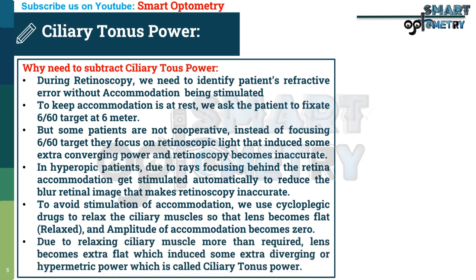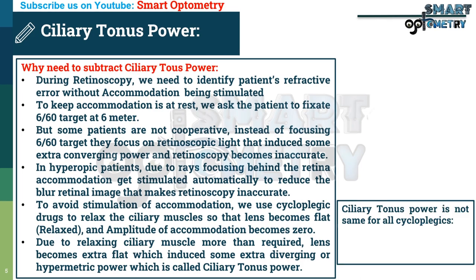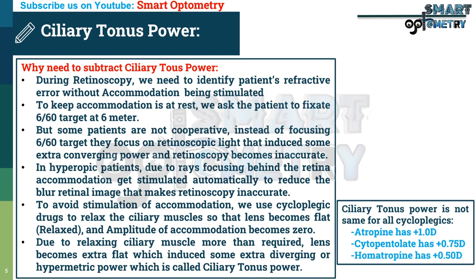Due to relaxing the ciliary muscles more than required, the lens becomes extra flat, inducing some extra diverging or hypermetropic power, which is called ciliary tonus power. Ciliary tonus power is not the same for all cycloplegics: atropine has plus 1 diopter ciliary tonus power, cyclopentolate has plus 0.75, and homatropine has plus 0.5.